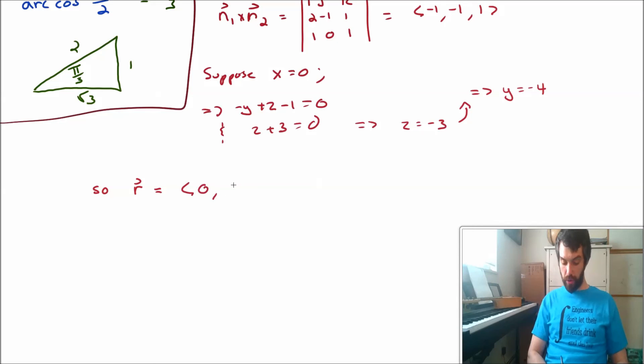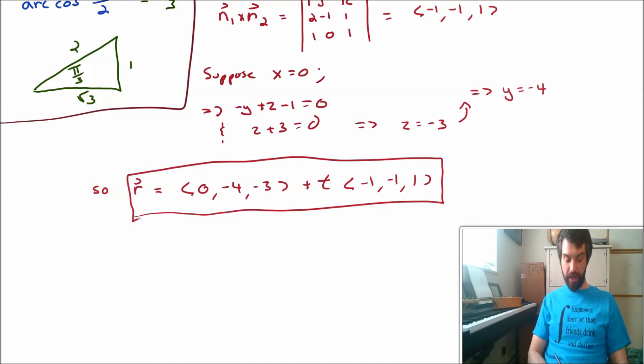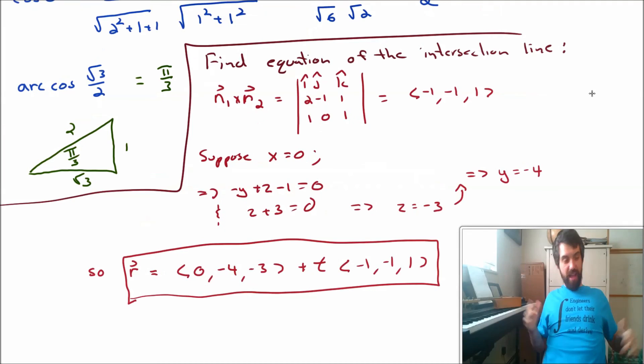And so final answer is the equation of my line now is the point, the x was 0, the y was minus 4, and the z was minus 3, and then I go out a distance t in this direction of the cross product, minus 1, minus 1, minus 1, that is my equation for the line of intersection.